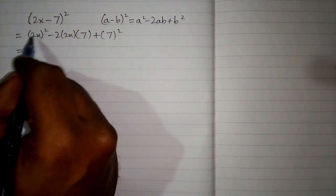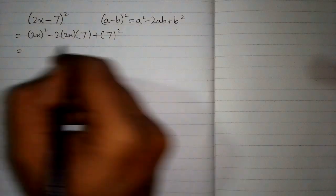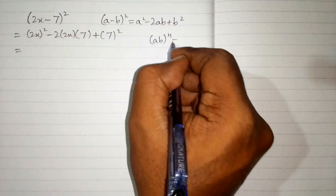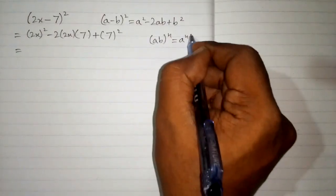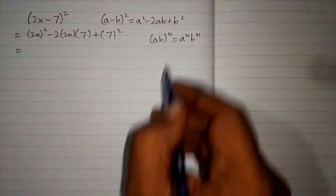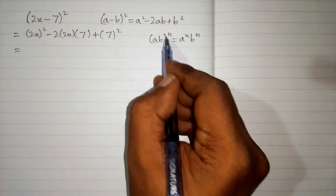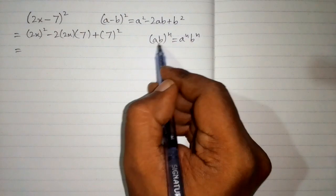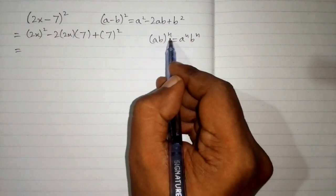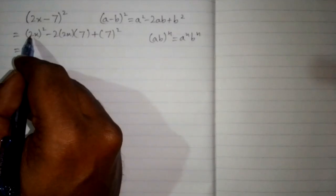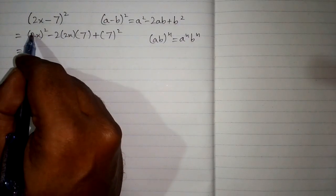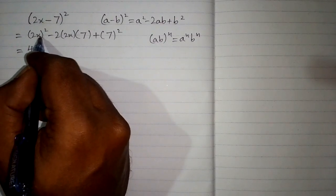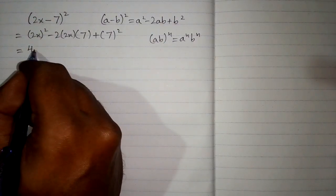Now square of 2x, we can apply this formula that ab whole power n is equal to a to the power n and b to the power n. So if something is multiplying, whole power n, then each variable will raise to the power n. So here we will apply square on 2. So square of 2 is 4 and then we will apply square on x. So we have x square.